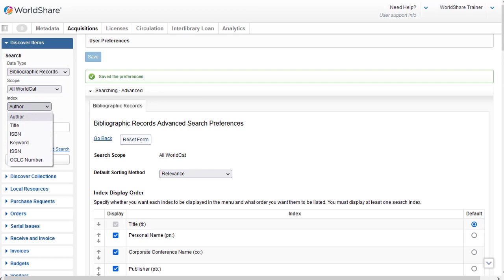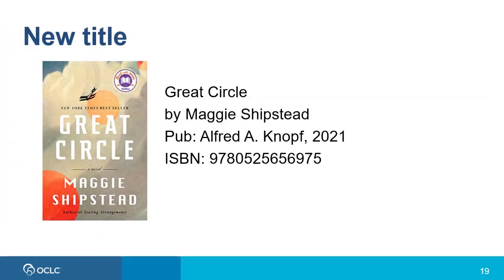Now I'm going to do a basic search and an advanced search, and I'll finally show you how to do an expert search. So let's say I have a copy of Great Circle by Maggie Shipstead, and since I have an ISBN, I know I can usually use this and do just a basic search. If you have a number such as an ISBN, it's always best to start with that, because your results will be more precise.